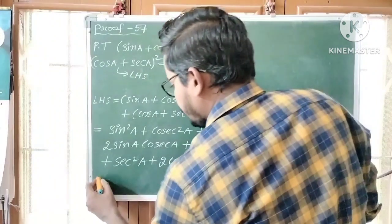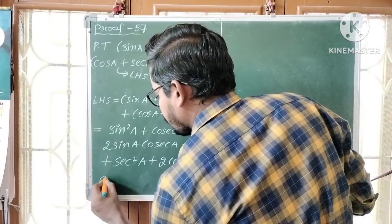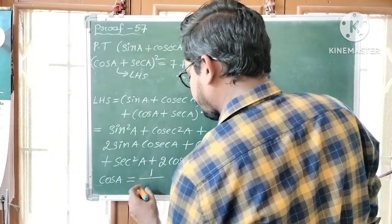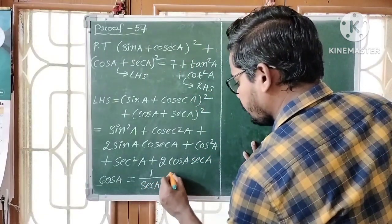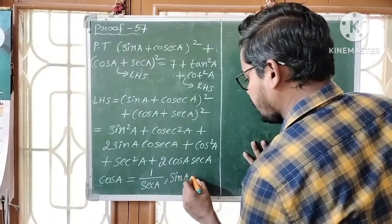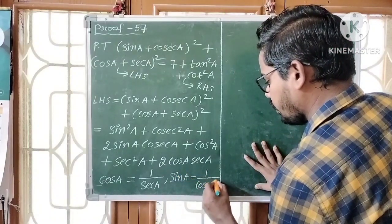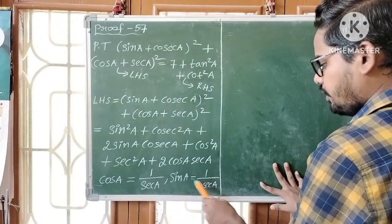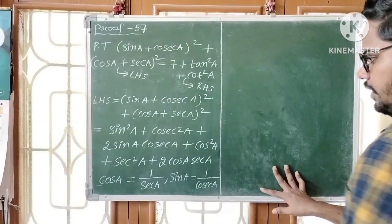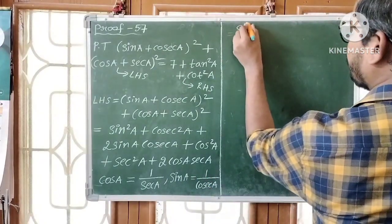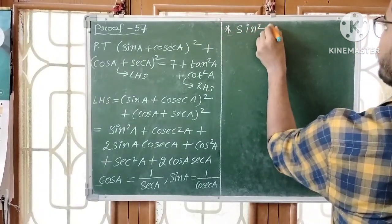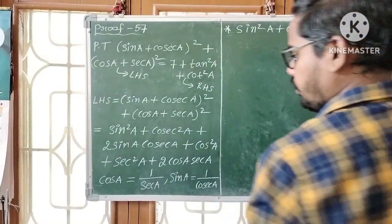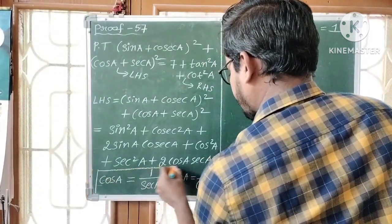In trigonometry we have some formulas. Cos a is equal to 1/sec a, and sin a is the reciprocal of cosec a, so sin a = 1/cosec a. So in place of cos a we can write 1/sec a, and in place of sin a we can write 1/cosec a. Also, sin²a + cos²a = 1. We are going to use these three formulas.